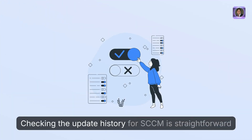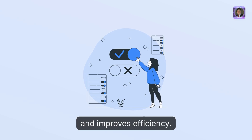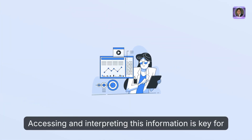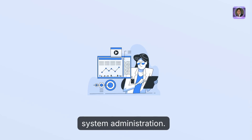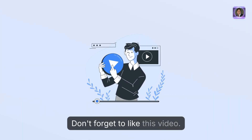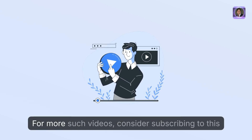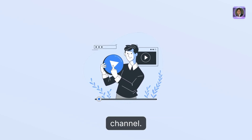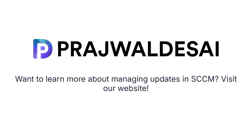Conclusion. Checking the update history for SCCM is straightforward and improves efficiency. Accessing and interpreting this information is key for system administration. Thanks for watching. Don't forget to like this video, and consider subscribing to this channel for more such videos. Want to learn more about managing updates in SCCM? Visit our website.